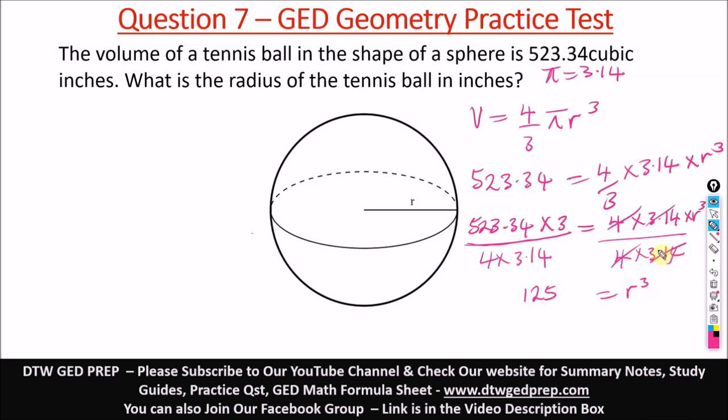And from here, to get r alone, so 125 equals r cubed, which also means r cubed equals 125. So to get r alone, what you do is you cube root. When you cube root r cubed, it gives you r. So you also have to cube root this number, 125, and the cube root of 125 is 5.